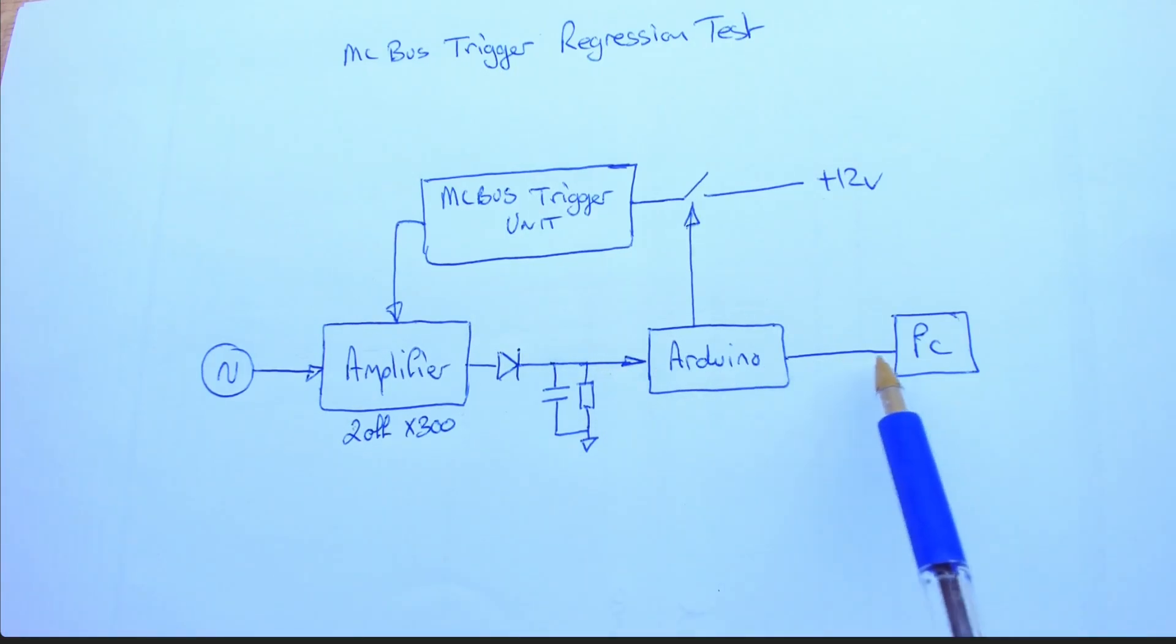Then we can just cycle this thing and count the cycles on a PC and look at the results. So this is the plan. Let's go and take a look at the code that we'll use in the Arduino and we'll see just how simple it is.